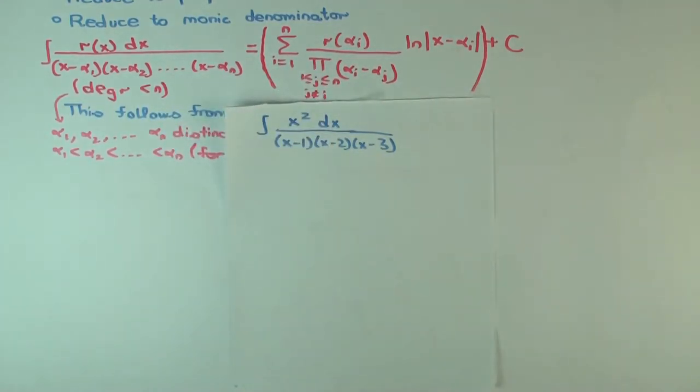If we just blindly try to use the formula, what do we get for the antiderivative?